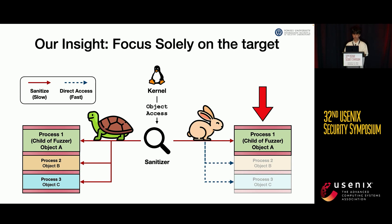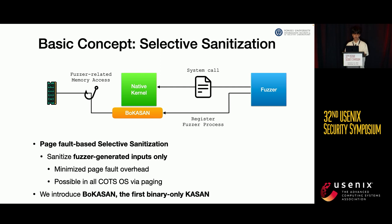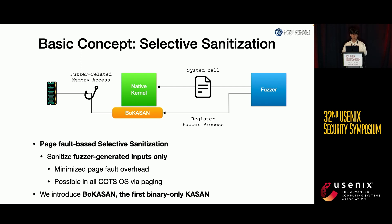So, what about sanitizing only process 1, the child of the fuzzer? We propose the concept of selective sanitization, focusing solely on memory allocated by the fuzzer process. It sanitizes only the memory we are interested in through page fault-based instrumentation. This can be easily applied to closed-source OSes with minimal dynamic instrumentation overhead. On top of this idea, we designed BokaSAN, the binary-only kernel address sanitizer.